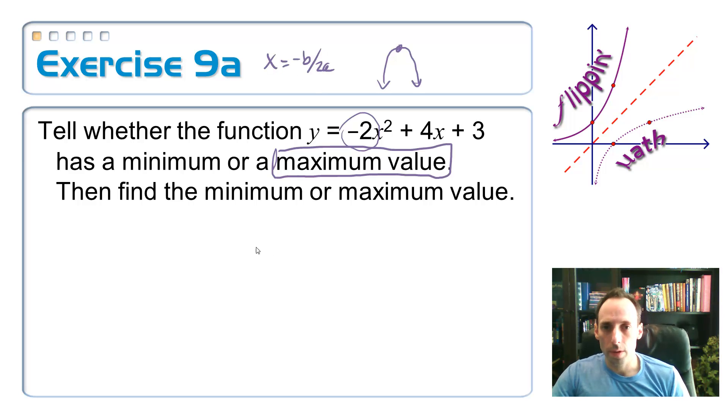Okay, so x = -b/(2a), so -4 / (2 × -2), which is -4 / -4, which is 1. Is that the minimum value?